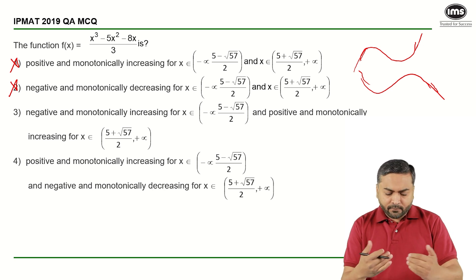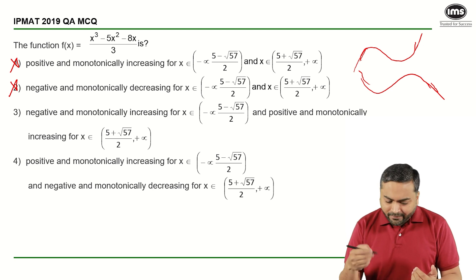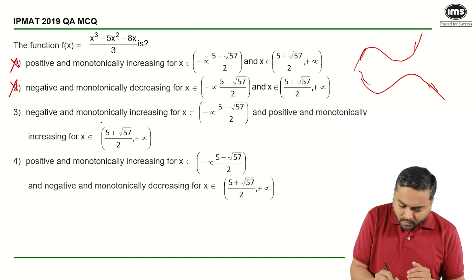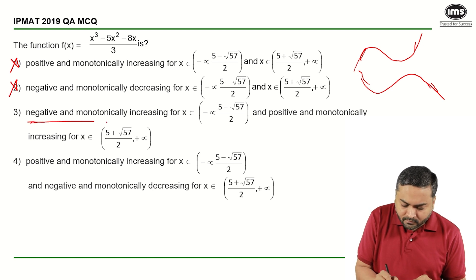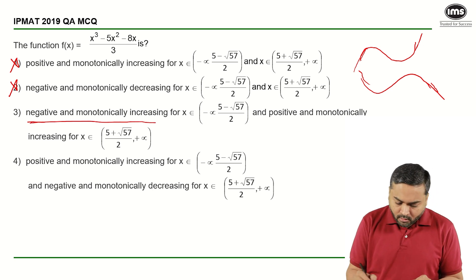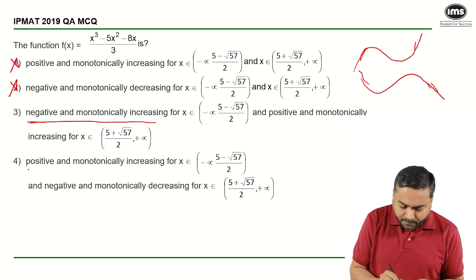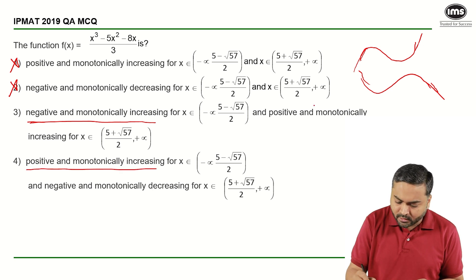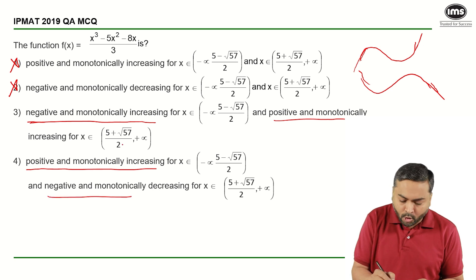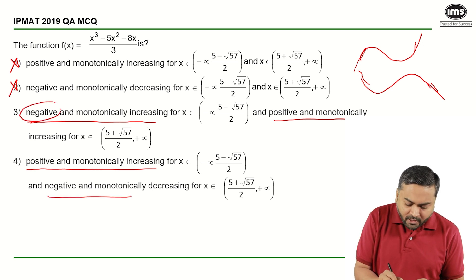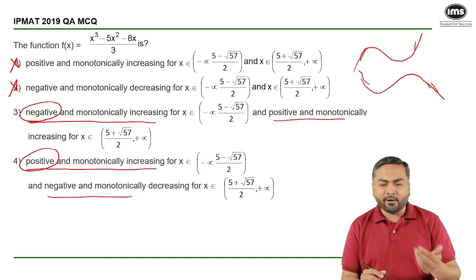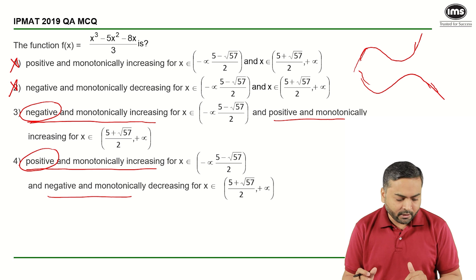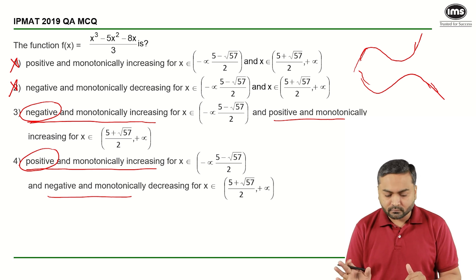Also, if I now look at the third and the fourth options, the only difference with the third and the fourth option: here it says negative and monotonically increasing, here it says it is positive and monotonically increasing, here it says positive and monotonically increasing and negative and monotonically increasing. So I have to only check for negative monotonically increasing or positive monotonically increasing. If one of them is correct, I can mark that as the correct answer.